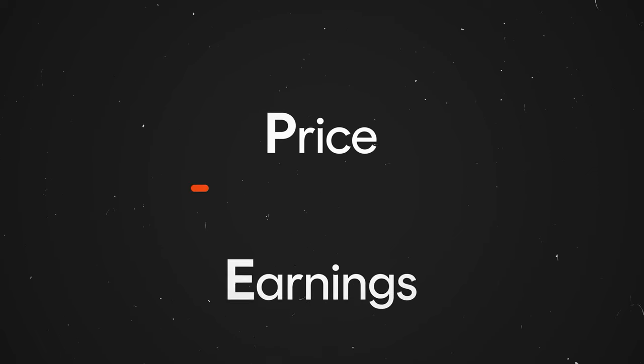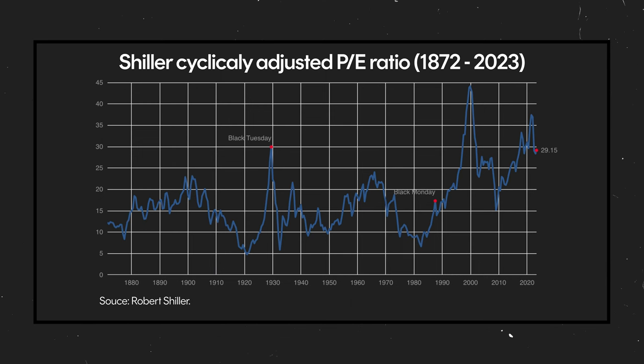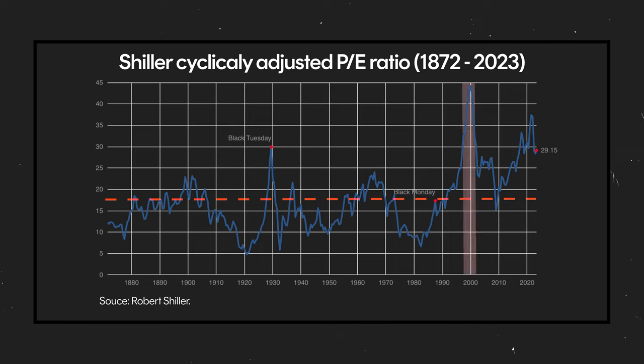The dot-com bubble can be identified in hindsight through the use of a financial metric called the price-to-earnings ratio — a simple measure of a company's price relative to its profits. The higher the P/E ratio, the more expensive a company is considered relative to its value. The S&P composite, on average, sits at a historical P/E ratio of 17 times. During the dot-com bubble, this ratio peaked at 44 times in December of 1999 — companies were basically being valued at 44 times their annual profit. Eventually, investors began to see the overinflated prices for what they were, and the bubble burst.